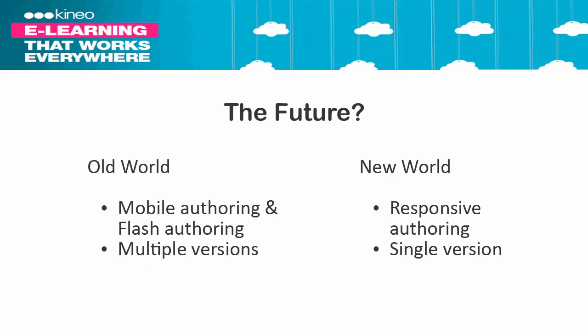So what does that mean in practice? If you think about the old world — to the extent that there is an old world in mobile learning — it wouldn't be unusual to say we want our content to work on a desktop, an iPad, and a phone. Therefore, I need three versions: I need a Flash version, I need an HTML version, and maybe I need an app — or a couple of apps if I'm trying to target multiple platforms.